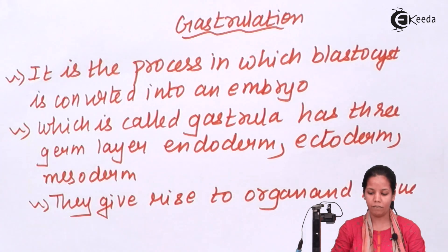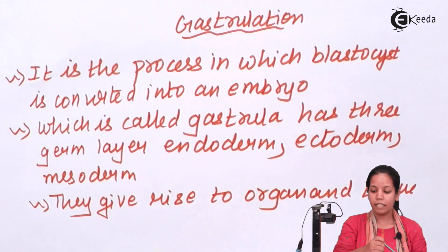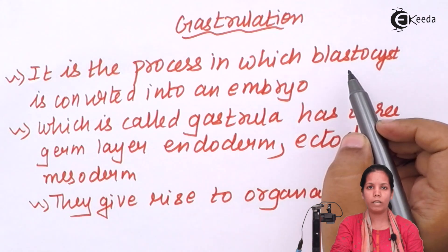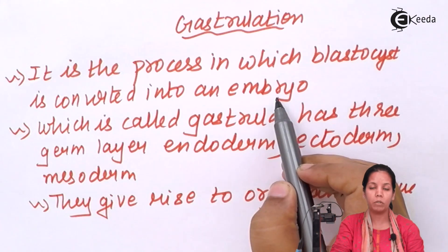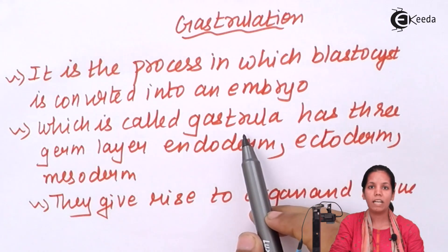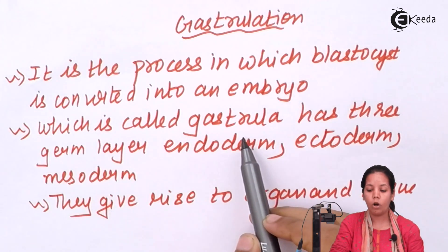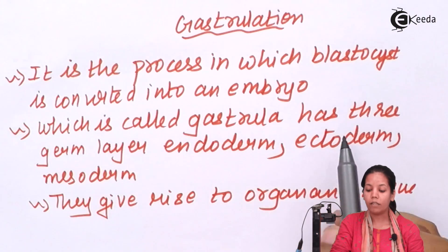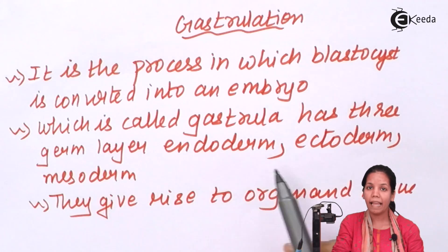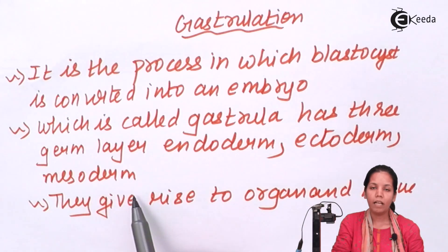Once this blastocyst is developed, it undergoes certain divisions to form an embryo, which is a child that will develop eventually within a few weeks. This process is called gastrulation, and during gastrulation the three germ layers are formed: endoderm, ectoderm, and mesoderm.